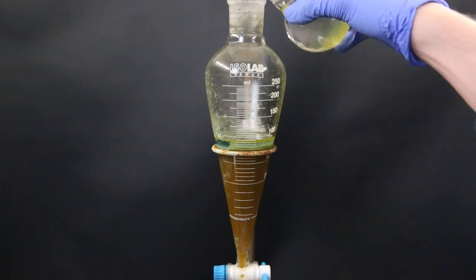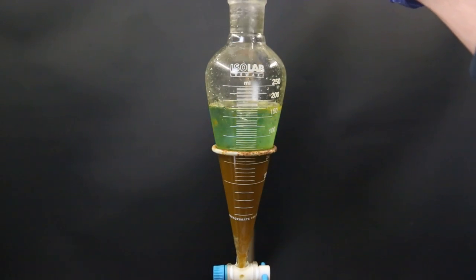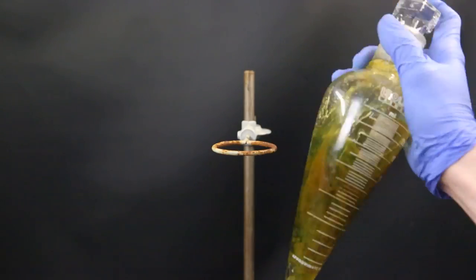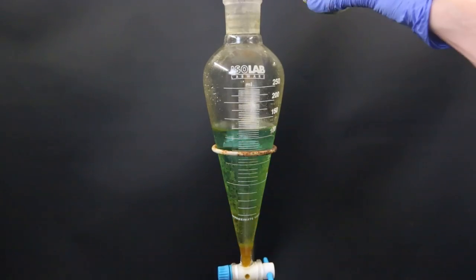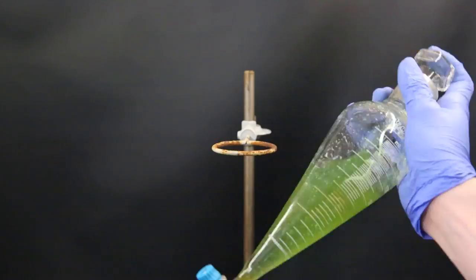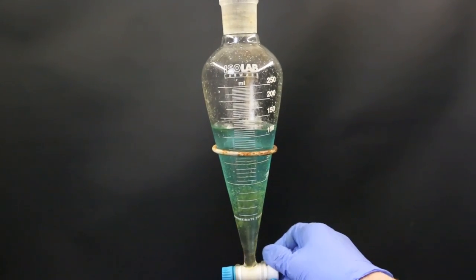I then move the mixture to a separatory funnel and dilute the upper water layer with some more water. I then shake it and drain away the lower DCM layer. I then extract the remaining water layer with some more DCM and combine the extracts.